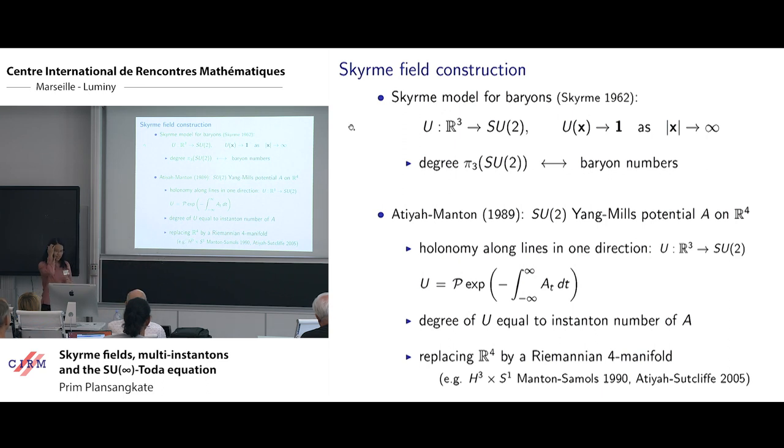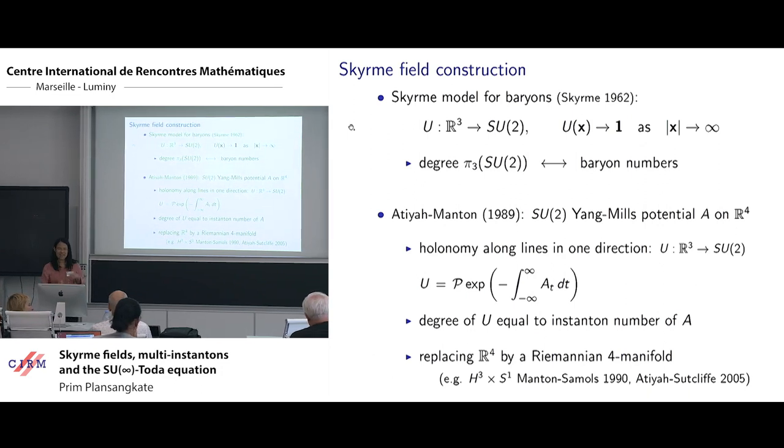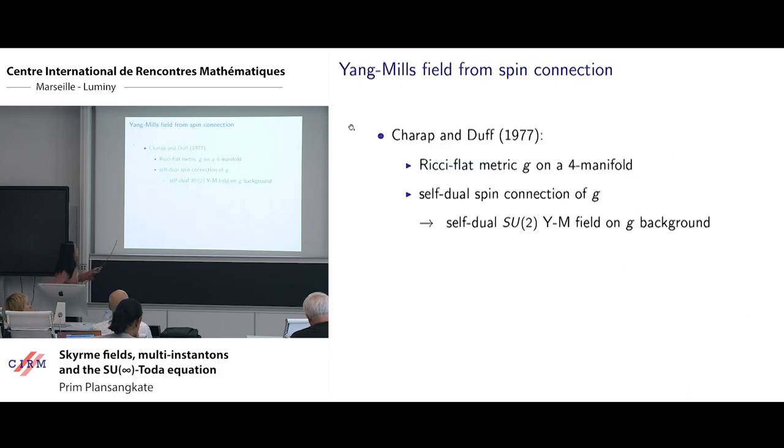This is construction of Skyrme field from Yang-Mills instanton. Now the construction of Skyrme field from gravitational instanton is based on this result. And also another result that you can get a Yang-Mills instanton from a gravitational instanton. This is due to the work of Schroers and Duff.